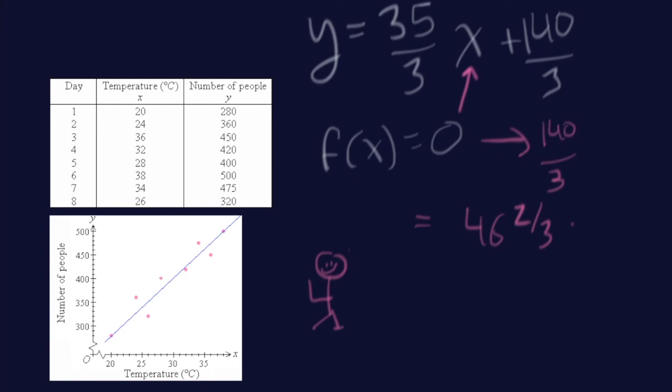What happens when the temperature has soared and is now 50 degrees? Well, again, I take my 50 and I plug that into there. And I would multiply my 35 over 3 and I would times it by 50. And then I would add 140 over 3. And I would get exactly, this is pretty cool, you would get exactly 630 people. 630 people would be expected at 50 degrees. Now, a really interesting thing. This is kind of where stats get kind of interesting.